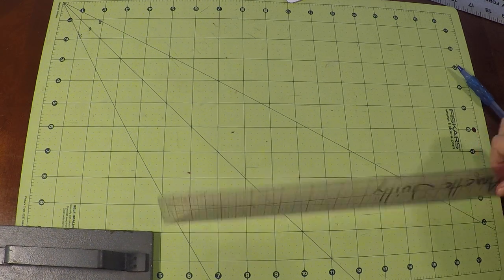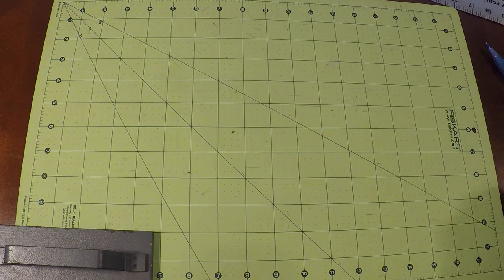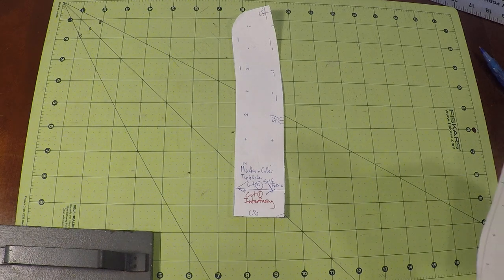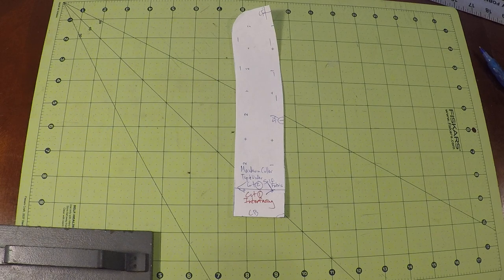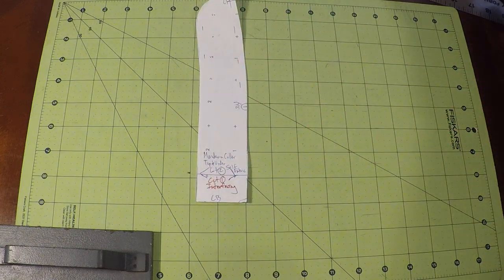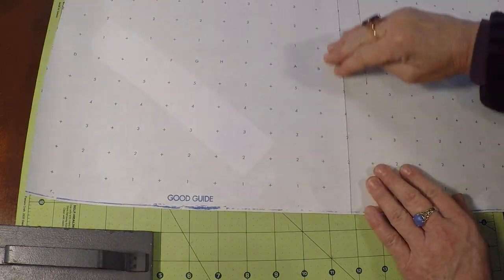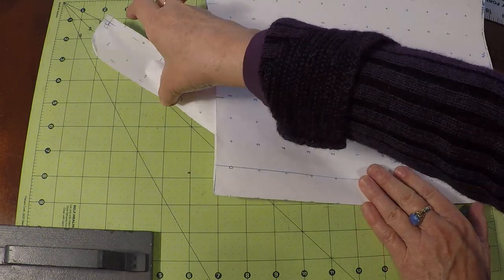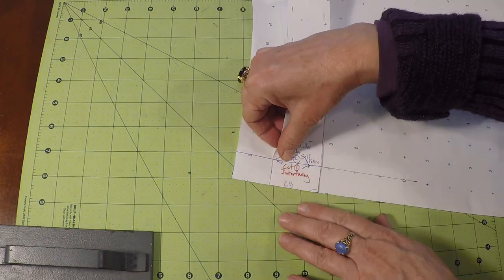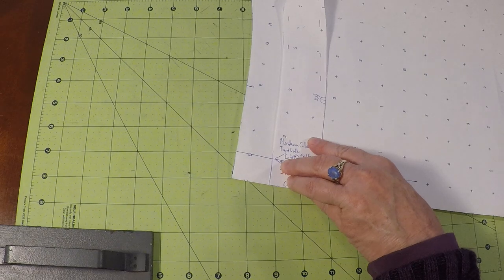Welcome to pattern making class, this is Annette Jolie and today we are working on a wingtip collar. First start by making a mandarin collar from my last video. Then once you have that mandarin collar with the seam allowance and everything on it, take a piece of pattern paper, get that grain line, fold it, take your mandarin collar and match grain line to grain line.